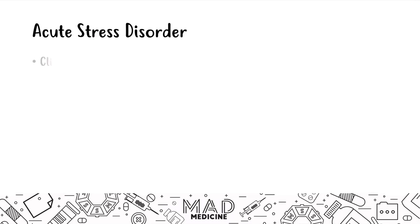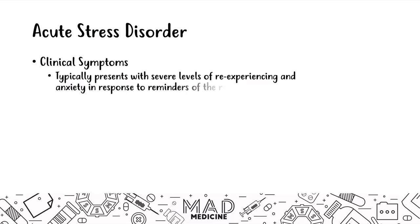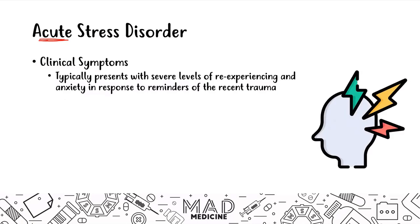We're going to talk first about acute stress disorder. This is a very simple, straightforward disorder. In acute stress disorder, patients typically are going to present with severe levels of anxiety in response to a very recent stress that they went through — something very recent in time. That's why we call it acute stress disorder. That traumatic event leads to stress building up, and it becomes a recurrent trauma that occurs in their mind. After the trauma occurred, they can't forget about what's going on, and they try to avoid any stimuli that might lead them to remember the trauma.